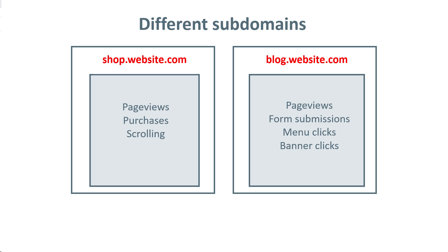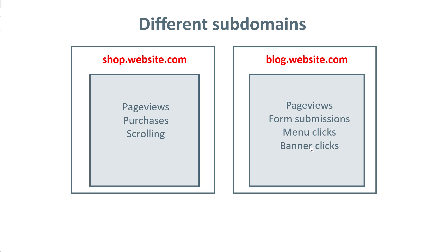Another example could be two different subdomains. Let's say we have website.com with two subdomains — one is a blog and the other is an ecommerce website, and their structure is different. On the ecommerce website, they will be focusing on ecommerce actions like add to cart, purchases, and checkouts. On the blog, they will be focusing on content consumption, lead generation, form submissions, and maybe some clicks. Since the setup is fairly different, even though they are subdomains of the same domain, I would still recommend using separate Google Tag Manager containers.